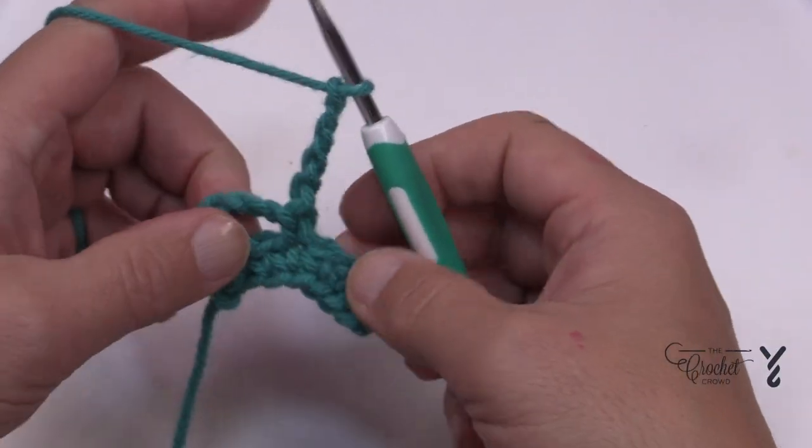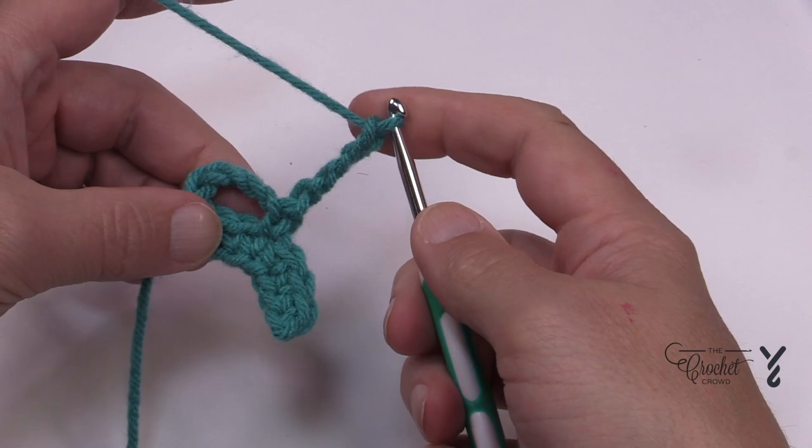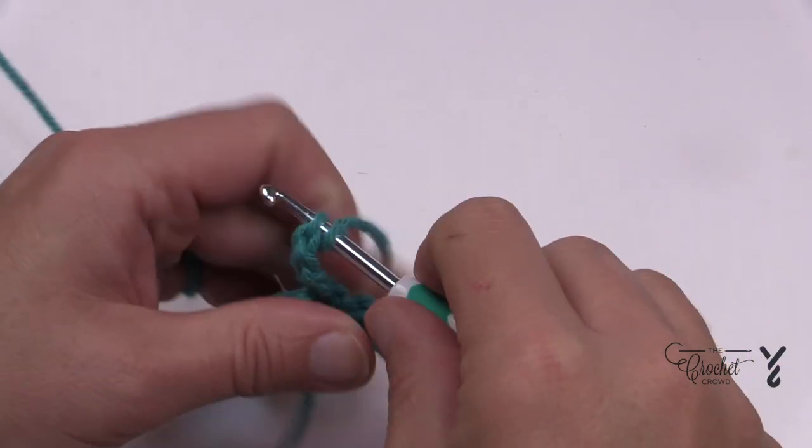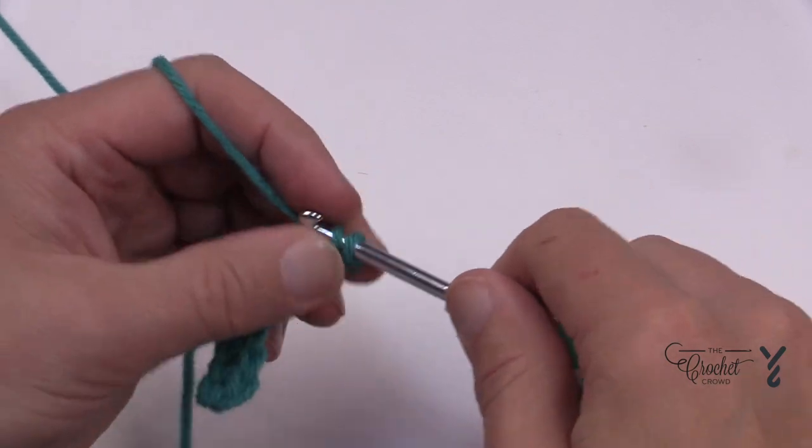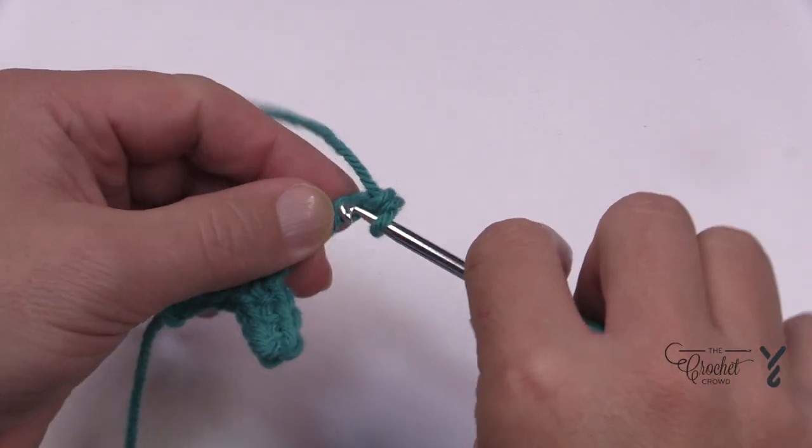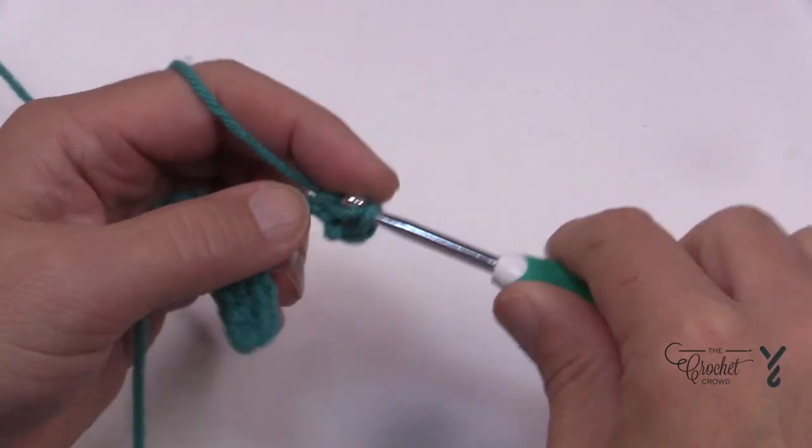So we're going to turn our work and we're going to begin and you can see the yarn is starting to take shape. So second chain from the hook you're just going to start single crocheting and when you get to the one that is attached here at the middle point you're just going to slip stitch that one. So just single crochet your chains as you're going back up.